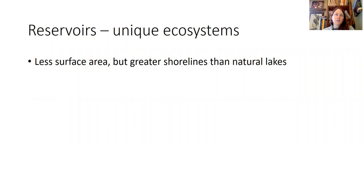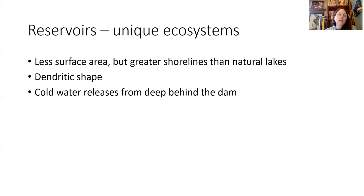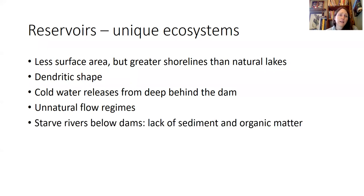We can talk a little bit about reservoirs because they're kind of like rivers, kind of like lakes. They tend to look like lakes but tend to have less surface area but greater shoreline complexity than natural lakes. They have a dendritic or tree-like shape because they're just a flooded river valley. Reservoirs provide really cold water releases from deep behind dams. They basically provide unnatural flow regimes. They minimize disturbances for downstream communities which is good for humans but bad for rivers. They can starve the river of both sediment and organic material downstream.